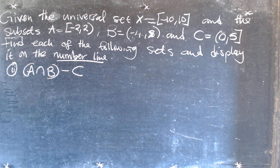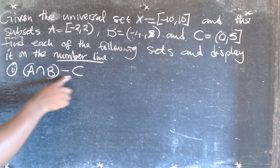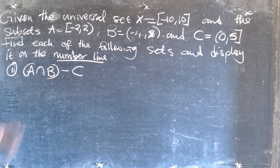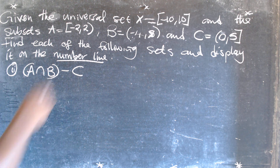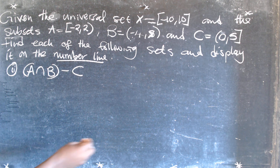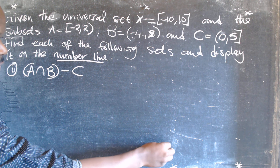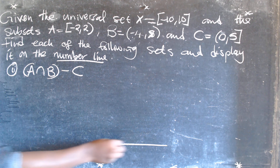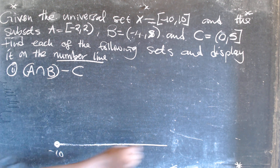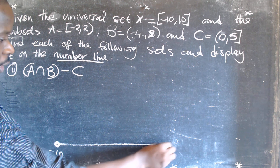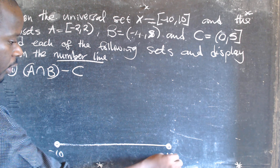In this case we want to find A intersection B minus C using the number line. We're starting with the universal set, as usual. The universal set in this case is from negative 10, where negative 10 is part of the set, to positive 10.